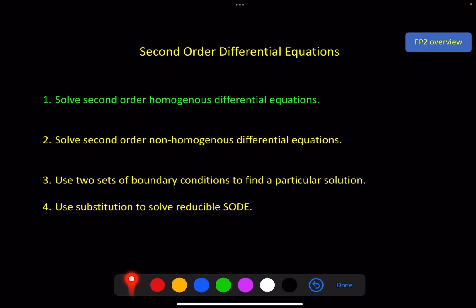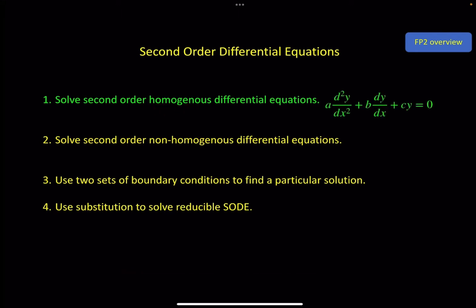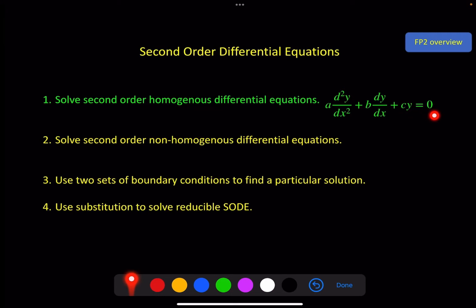So a quick overview of the chapter. We're going to solve second order homogeneous differential equations. Homogeneous there is just a really fancy way of saying when they equal zero. Then we'll solve the second order non-homogeneous differential equations, and you might be able to guess that that is when they do not equal zero.